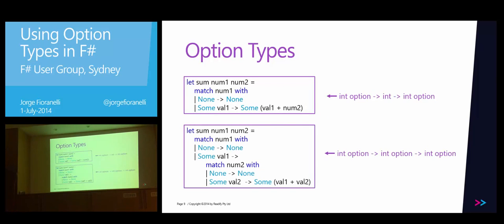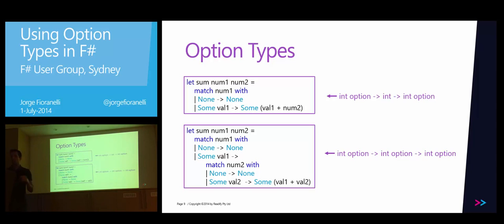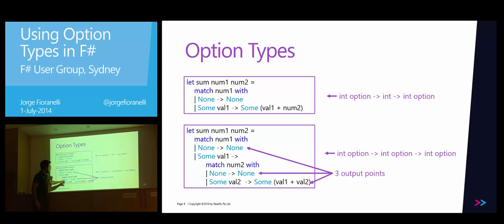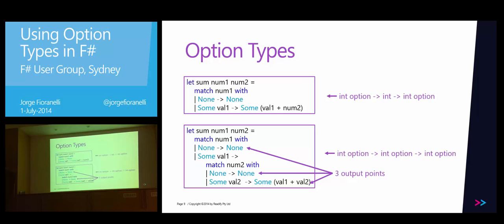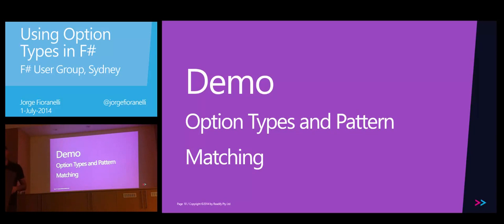Let's go even further — this uses two pattern matchings. Once we evaluate number one, we then evaluate number two using pattern matching against two patterns as well. So what we have here is three different output points: first, in the case that number one is none; second, in case number two is none; and third, if neither is none, we can actually perform the addition. So let's go and write a bit of code to get your mind around that.